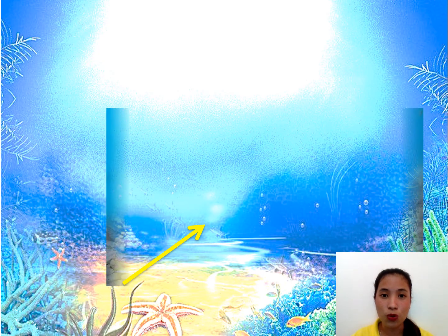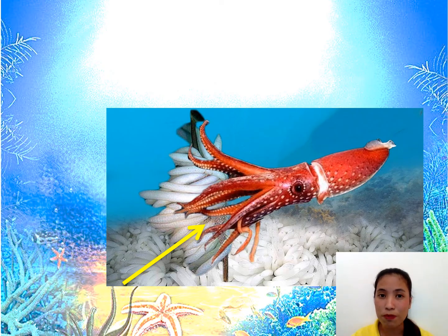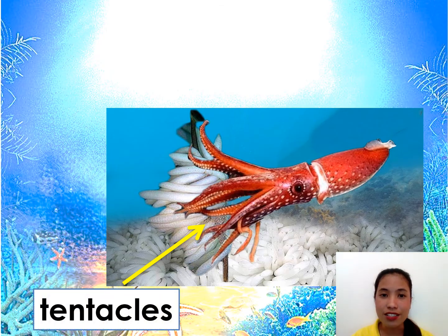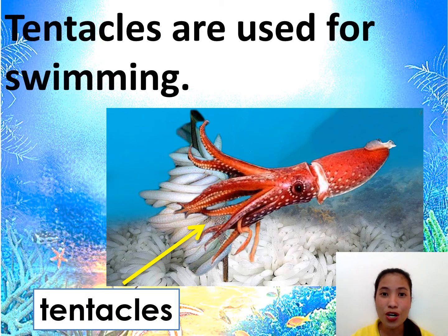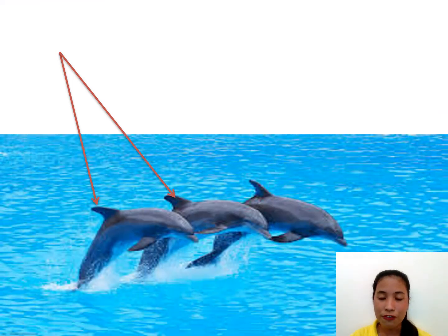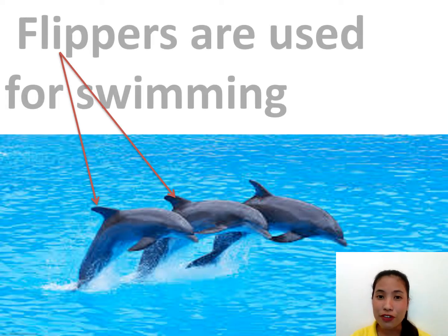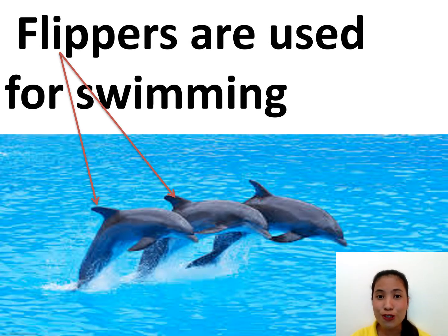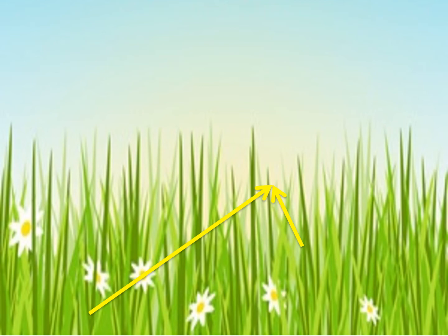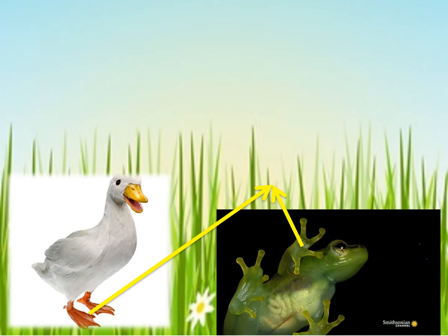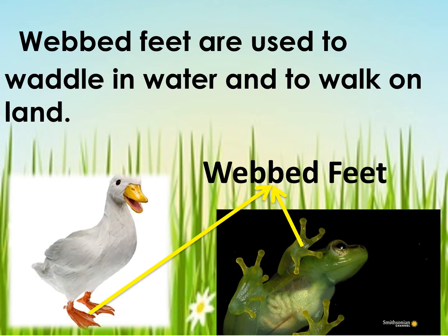Another animal that lives in water is the squid — it can also swim. But what does the squid use to swim? Its tentacles. Tentacles are used for swimming. Dolphins can also be found in water, and they use their flippers. Flippers are used for swimming. Some animals do not have fins but can still move in water, just like the duck and a frog — they use their web feet. Web feet are used to waddle in water and to walk on land.